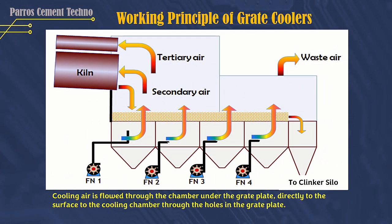Working Principle of Grate Coolers. Cooling air is flowed through the chamber under the grate plate, directly to the surface of the cooling chamber through the holes in the grate plate. The clinker material that comes out of the rotary kiln falls on the grate plate and moves out of the grate cooler, due to the thrust of the grate plate which moves forward and backward continuously.